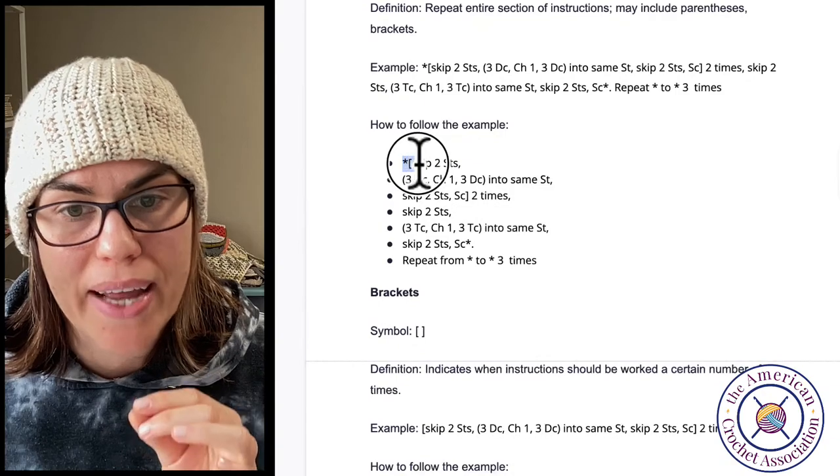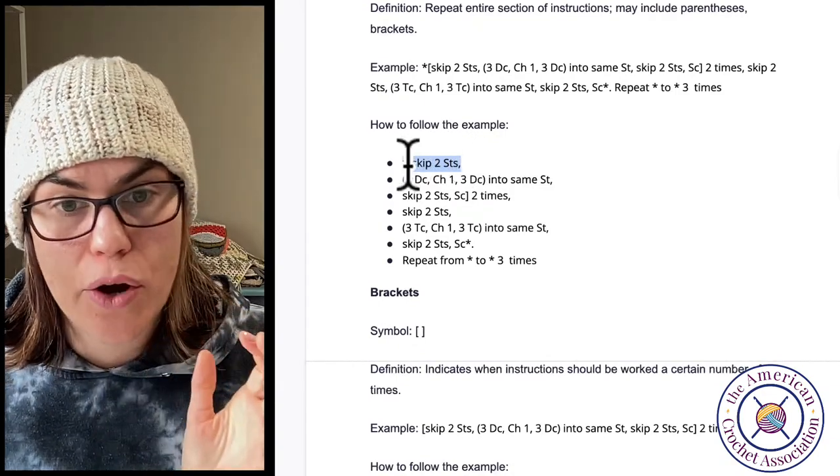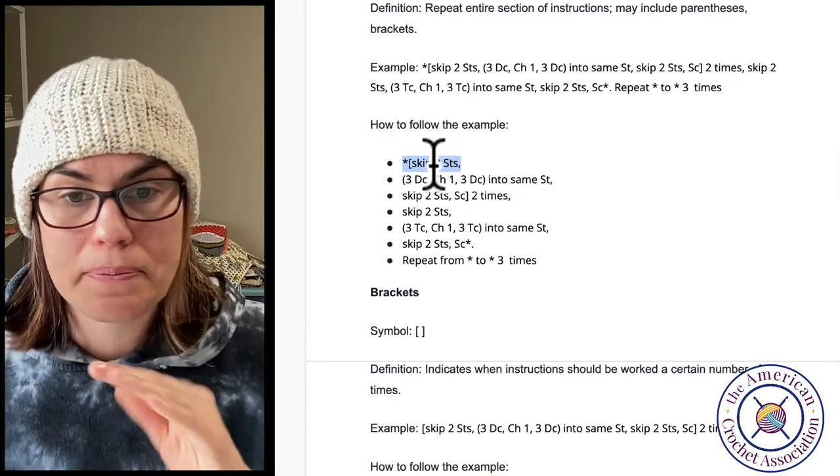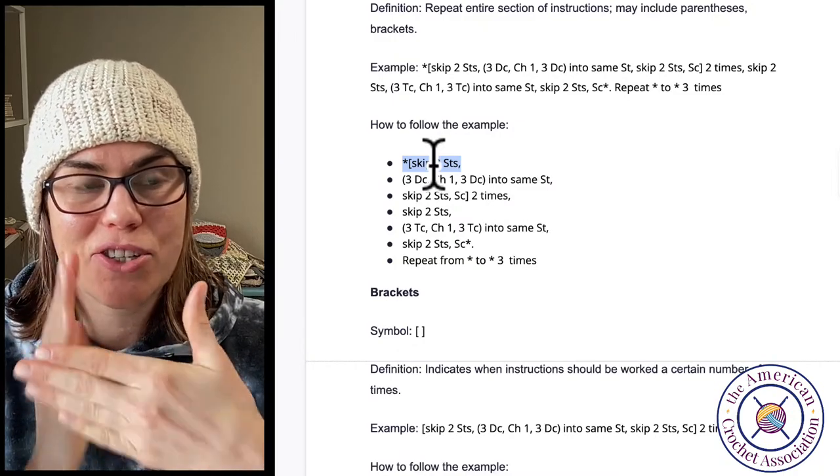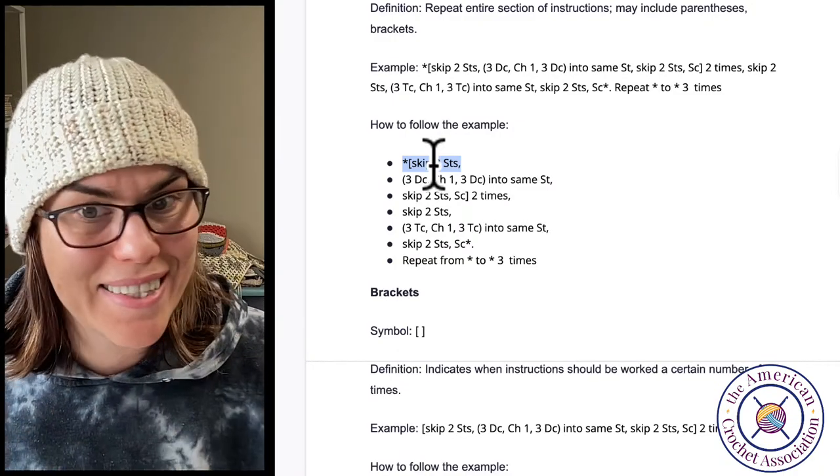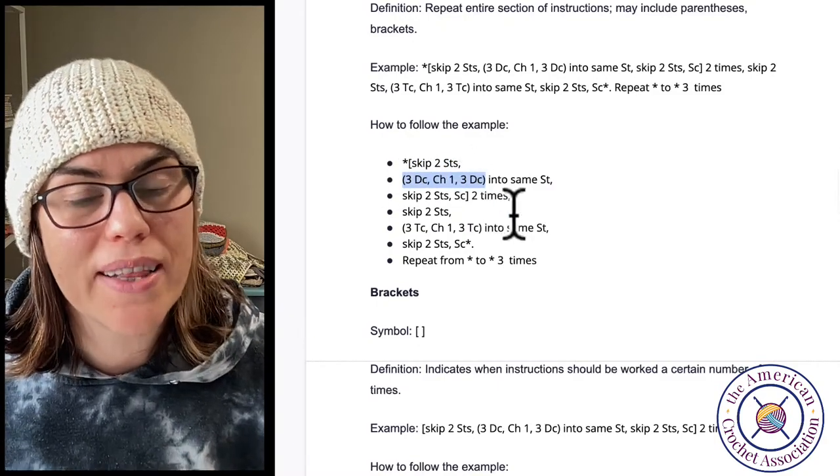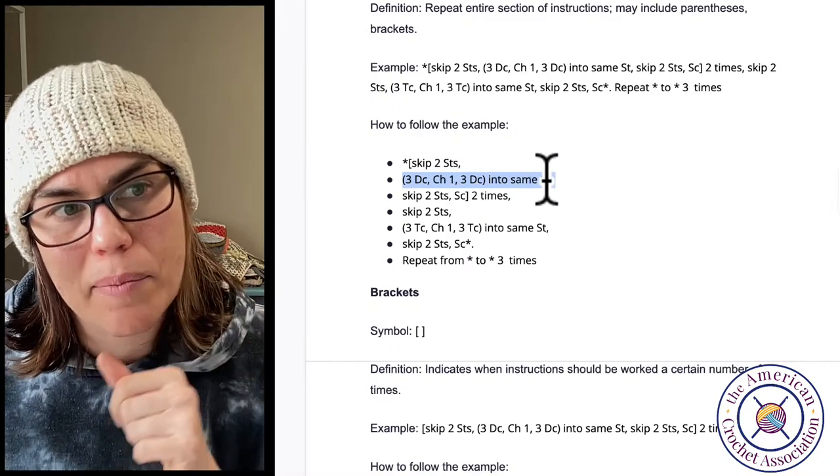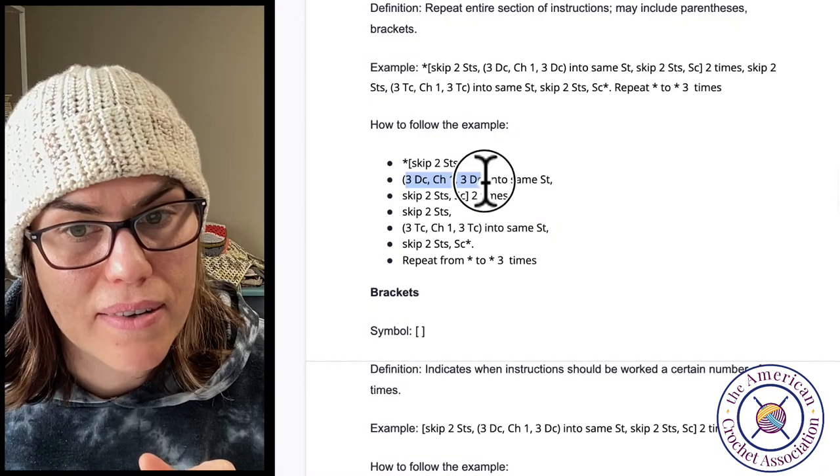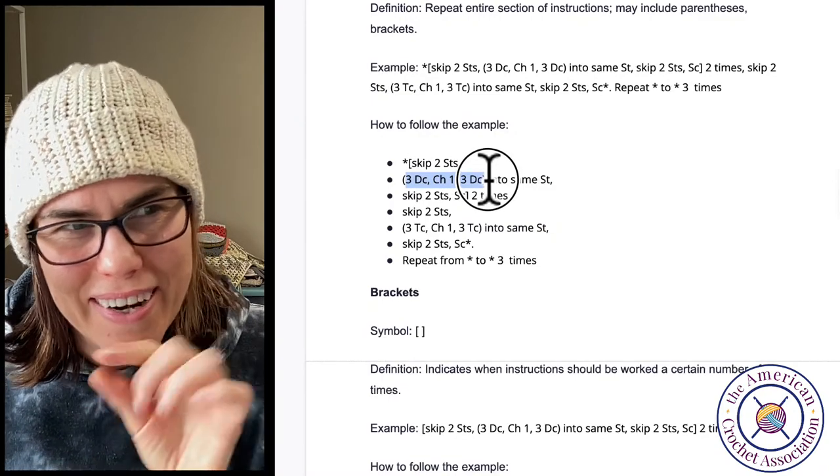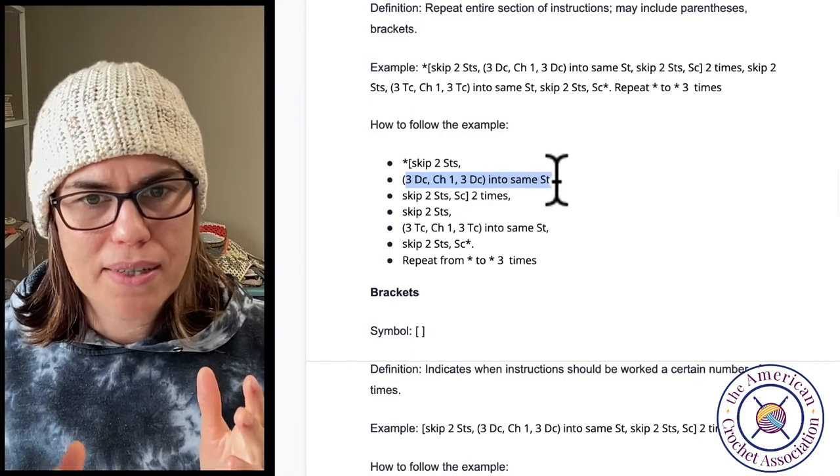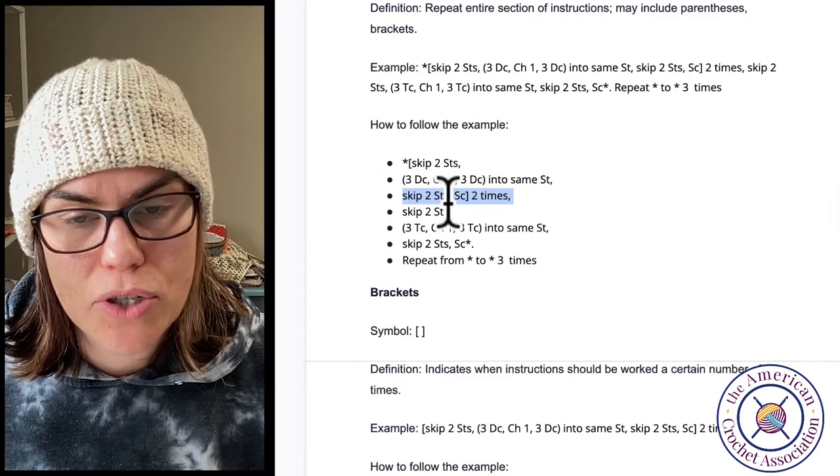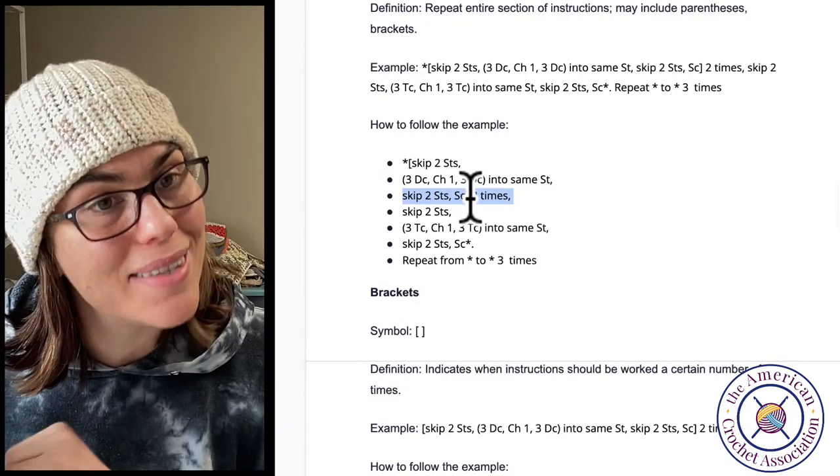When I see asterisk, bracket, skip two stitches, comma, okay. I know that there are two repeats that are about to start, and the beginning of it says skip two stitches, comma. So that's all I need to do. So I'm going to look at my pattern work and skip two stitches. What's the next thing I'm going to do? The next thing says parentheses. Parentheses are three double crochet, chain one, three double crochet into same stitch. So I'm going to skip two stitches, three double crochet, chain one, three double crochet into the same stitch. Did I do that? Great. I'm going to move on.